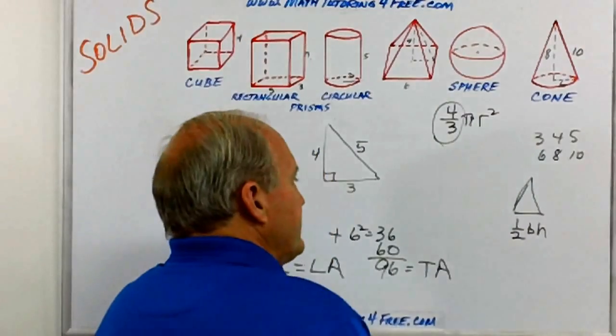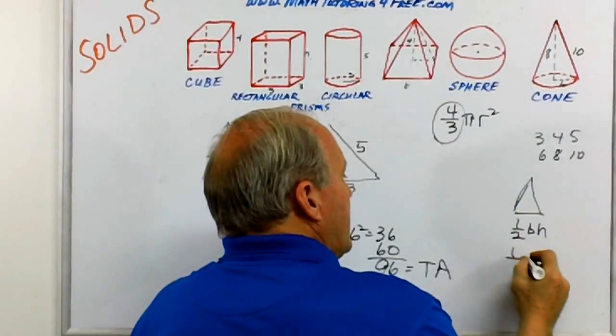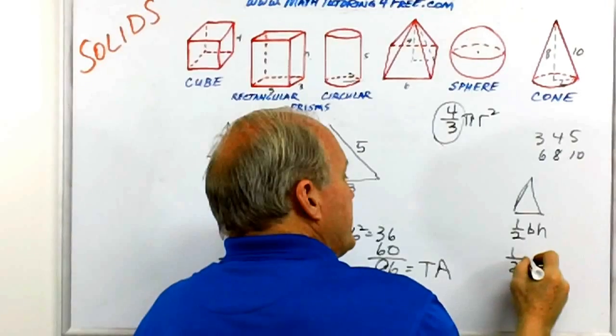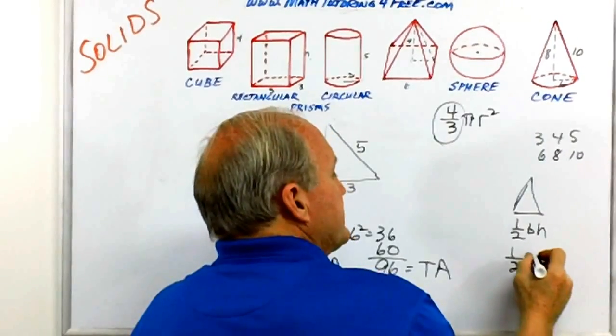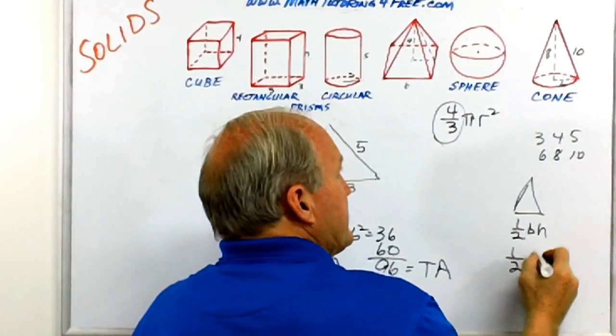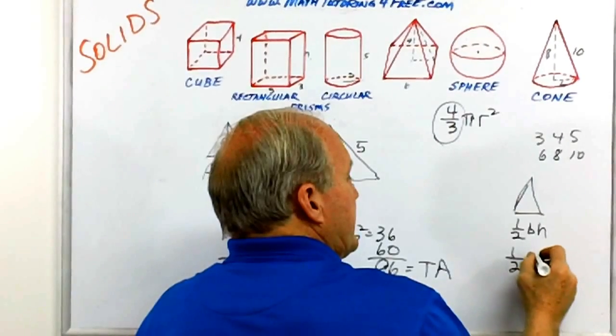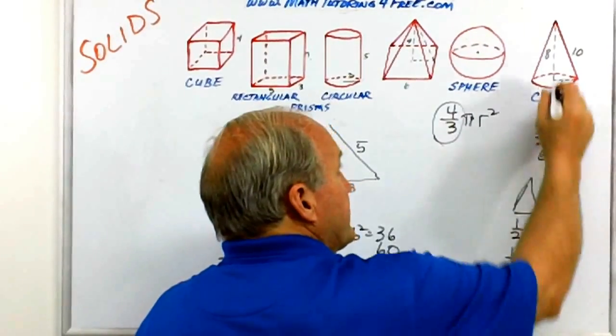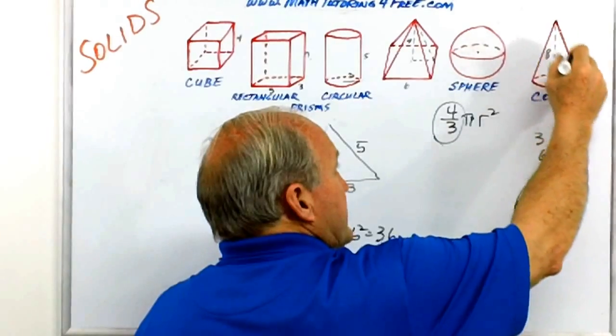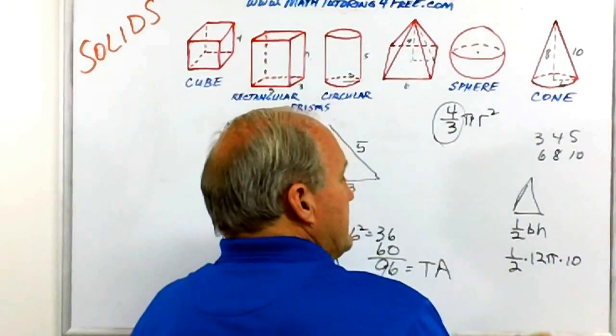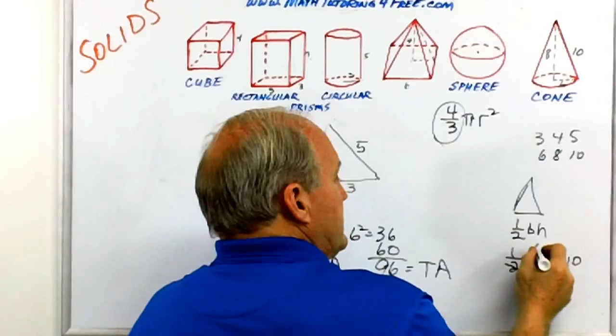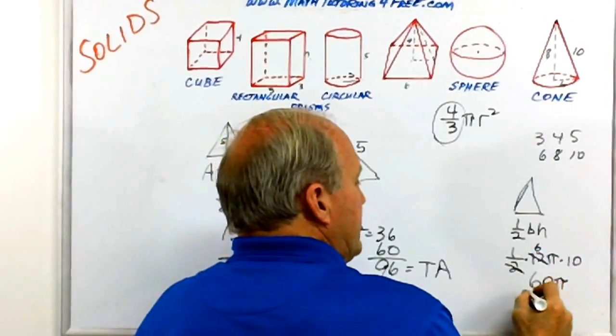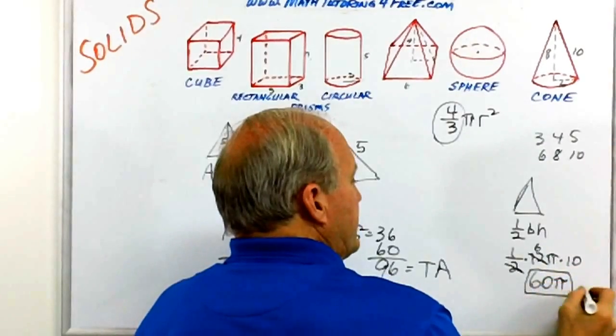The base in this case is what? It's the perimeter of the circle, so that's the circumference. So our area for this lateral area is going to be one half the base, which is pi times the diameter. If this is six, then the diameter is 12, 12 times pi times the height. In this case, the height is the 10. Okay. Six times 10, 60 pi. That again is the lateral area.